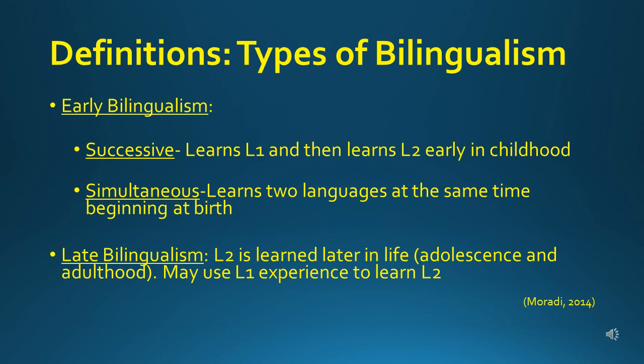Successive bilingualism means a child learns their first language, L1, and then later learns their second language, L2, early in their childhood. For example, a child who grows up in China, learns Mandarin, and then later moves to America and learns English.